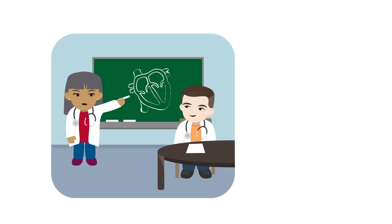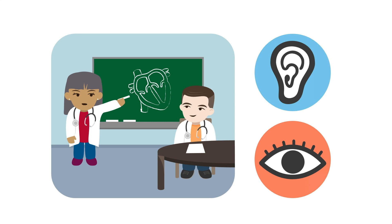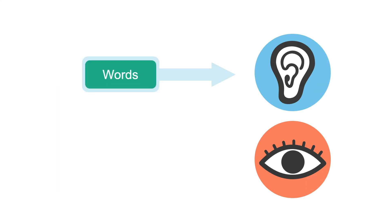When we learn in a classroom or school setting, we take up information through two channels, the ears and the eyes. Our ears receive information in the form of words, whereas our eyes receive information in the form of images or words.